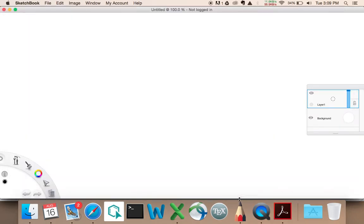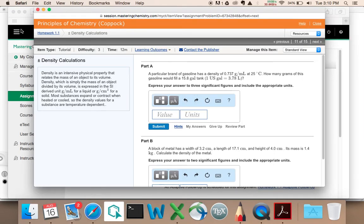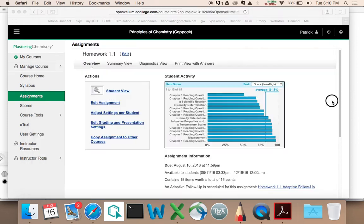So let me go back to here and say that there's a certain brand of gasoline that has a density of 0.737 grams per mL, and that was at 25 degrees Celsius. And the question then, let's go back here, is how many grams of this gasoline would fill a tank of 78 gallons?